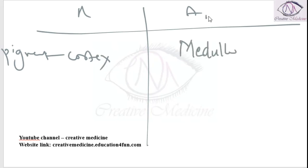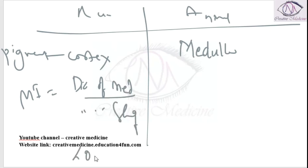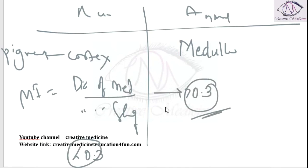The medullary index is equal to the diameter of the medulla divided by the diameter of the shaft. The medullary index is always less than 0.3 in human hair and always more than 0.3 in animal hair.